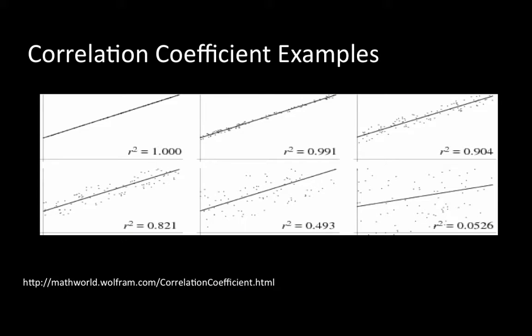Here are some examples of correlation coefficient. What this shows is if all the points are exactly on a straight line, then the correlation coefficient is exactly one. If the points are almost on the straight line, very close to the line, then the correlation coefficient is very high, close to one.